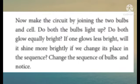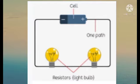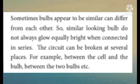Now make the circuit by joining the two bulbs and cell. Do both the bulbs light up? Do both glow equally bright? If one glows less bright, will it shine more brightly if we change its place in the sequence? Change the sequence of bulbs and notice. Sometimes bulbs that appear to be similar can differ from each other. So similar-looking bulbs do not always glow equally bright when connected in series.